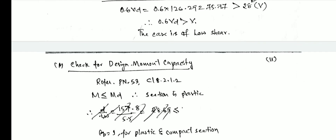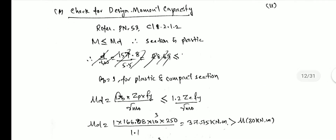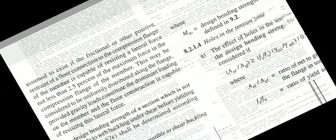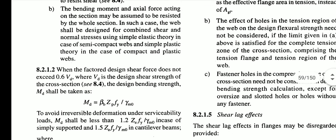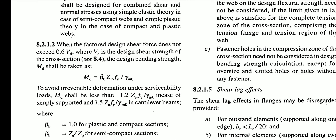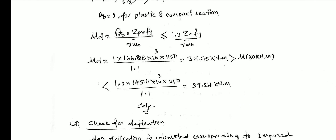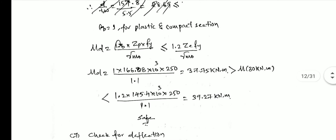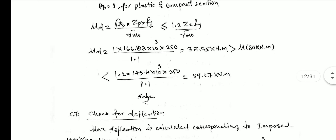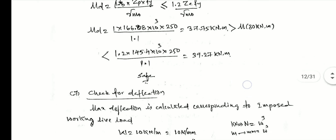Since it is a low shear case, we calculate the design bending capacity Md using the formula from IS 800 page 53. When the factored design shear force does not exceed 0.6 × Vd, we apply the standard Md formula. We check that Md > Mu (30 kN·m) and also verify Md ≤ 1.4 × Zdz × fy / γm0, where Zdz is taken from the steel table.